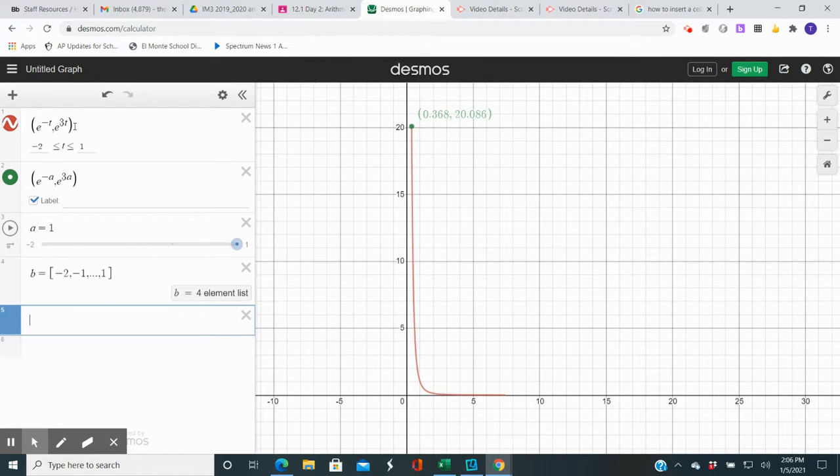I've entered those two parametric equations into cell one in Desmos as an ordered pair. I use the letter t so that I have a set of parametric equations using the parameter t. What makes this a set of parametric equations is entering the two equations as an ordered pair.